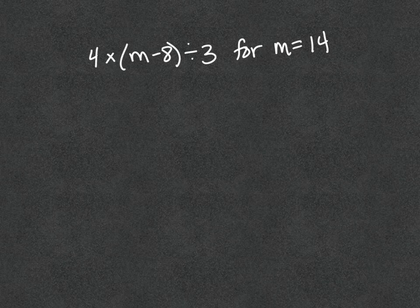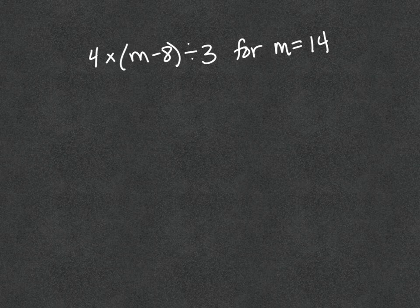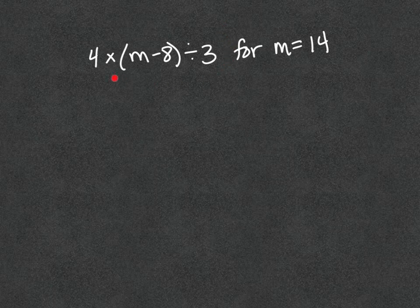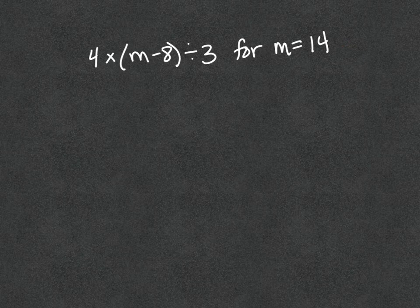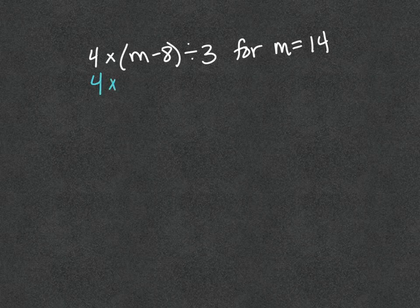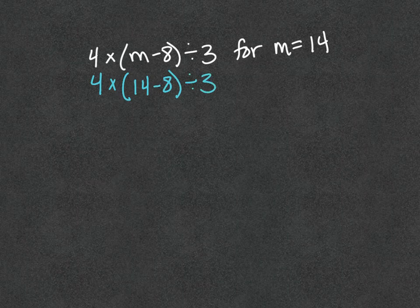The next example is 4 times the difference of M and 8, so M minus 8, divided by 3 for M equals 14. It looks super long and complex, but once you realize this is my expression and they're just saying M is 14, you plug it in. So we'll plug in 14 in place of M. We still have 4 times whatever is in the parentheses, but instead of M, now I write 14. Everything else I just copy down.